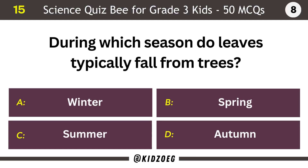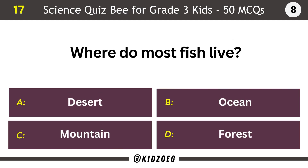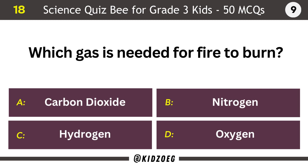During which season do leaves typically fall from trees? Autumn. Which one of the following is an input device? Keyboard. Where do most fish live? Ocean. Which gas is needed for fire to burn? Oxygen.